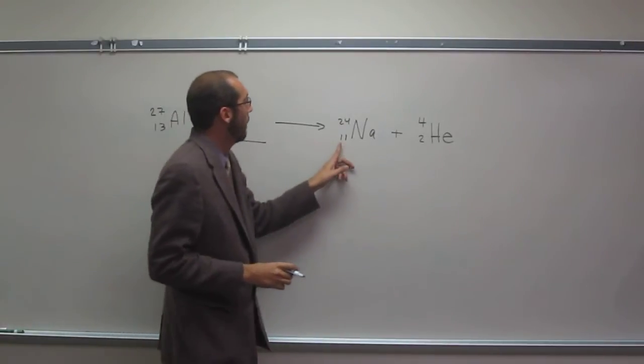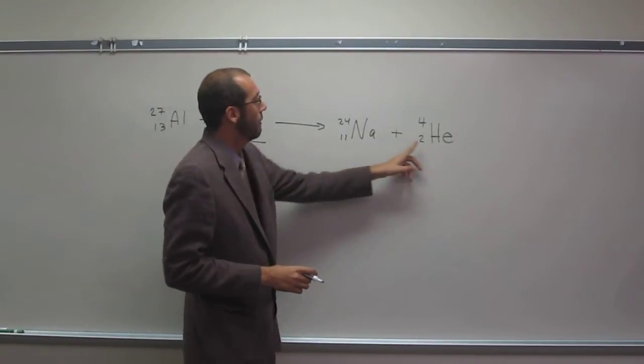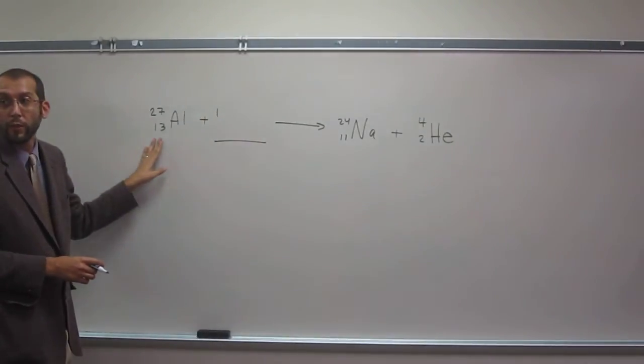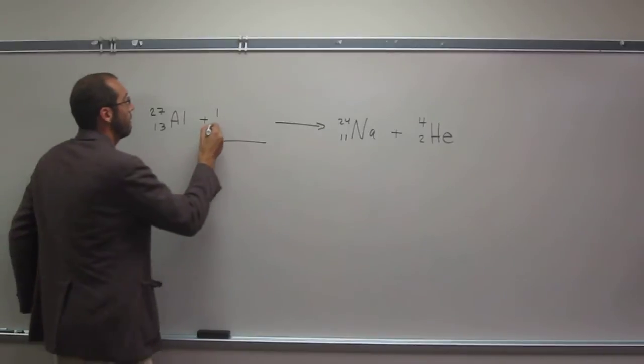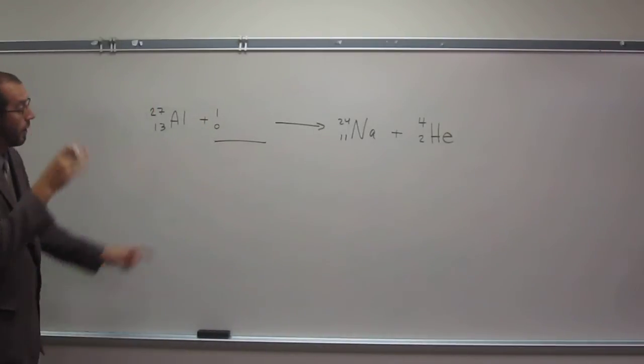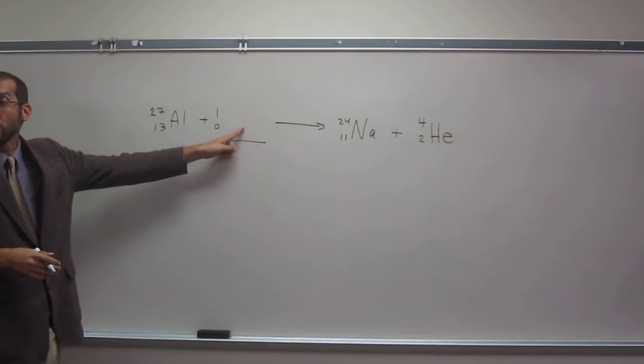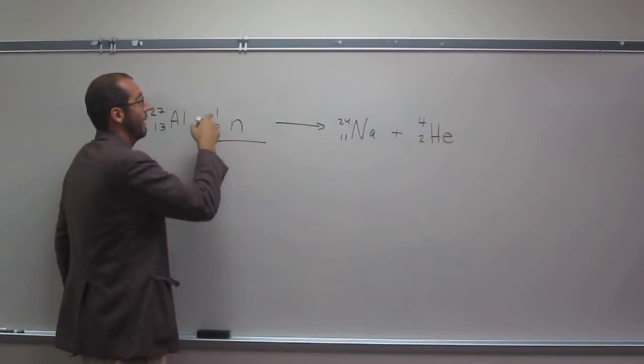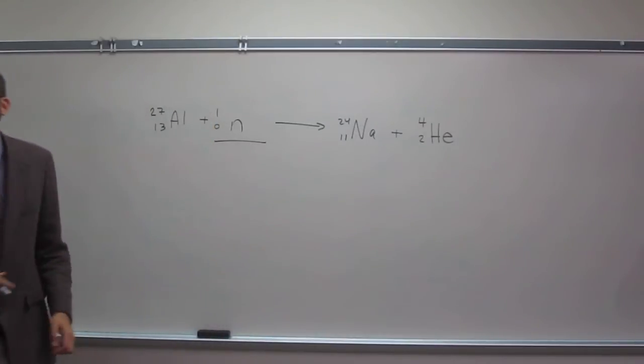And if we look for our number of protons, we have 11 plus 2, that's 13, and over here we have 13 as well. So this is going to be 0. The particle that's here is just a neutron. Something that has a mass of 1 and 0 protons.